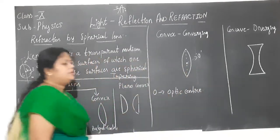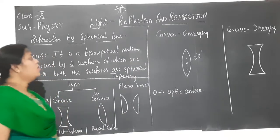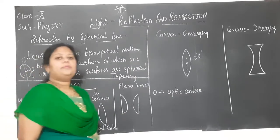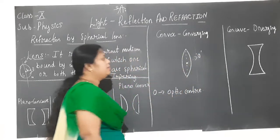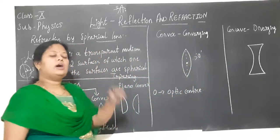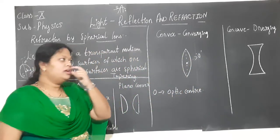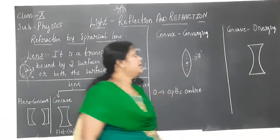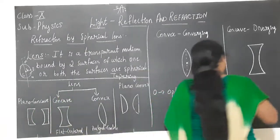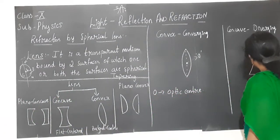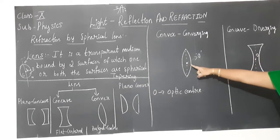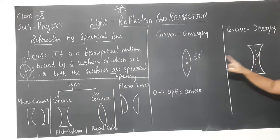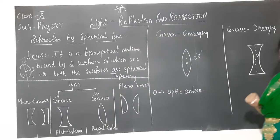The centre of the lens is represented by the letter O, called the optic centre. In mirrors it was represented by the letter P, called the pole. O is the optic centre of both lenses.